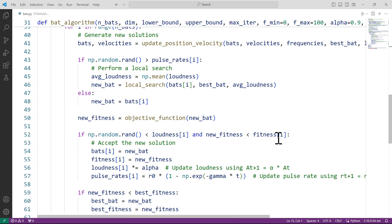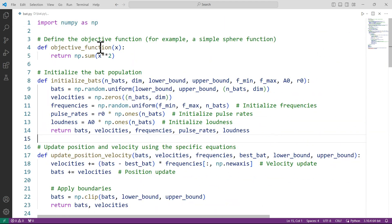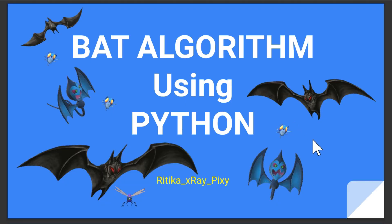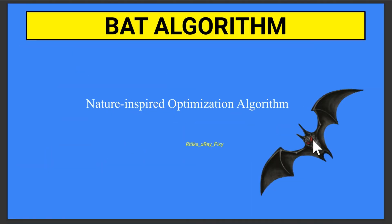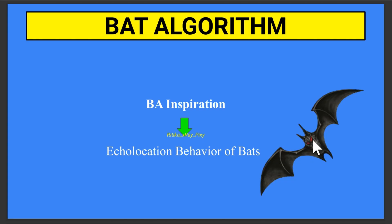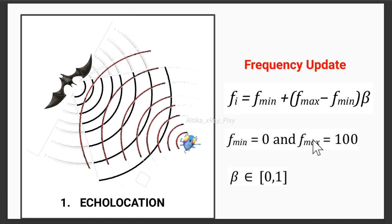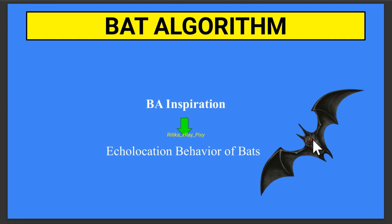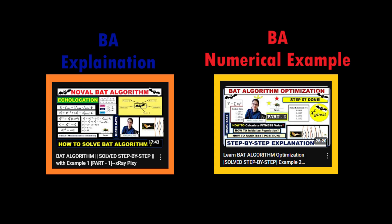In this video we will implement the Bat Algorithm using Python. Bat Algorithm is a nature-inspired optimization algorithm developed by Yang in 2010. This algorithm is based on the echolocation behavior of bats. Bats use echolocation to detect prey, avoid obstacles, and navigate in the dark. This algorithm simulates this behavior to find the optimal solution for complex optimization problems. We already discussed this algorithm in a previous video using a numerical example, and now we will implement it using Python.